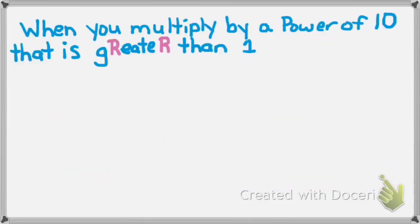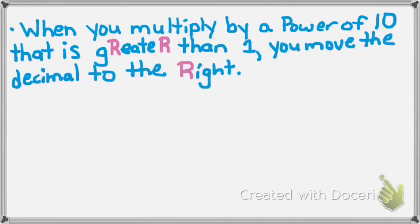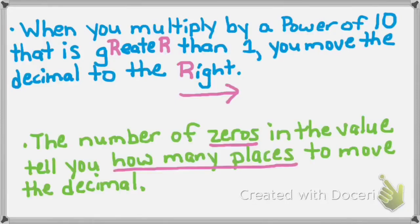When you multiply by a power of 10 that is greater than 1, the 'r' in greater is a reminder that you'll have to move your decimal to the right. So greater means move your decimal to the right. And the number of zeros in the value tells you how many places to move that decimal.